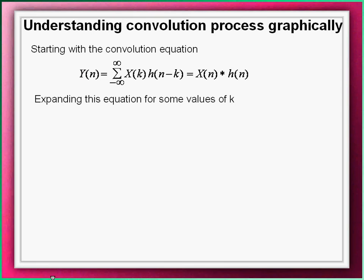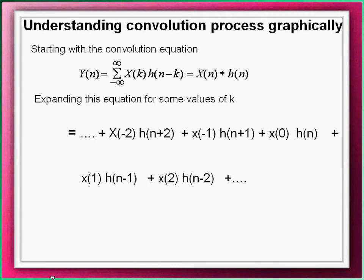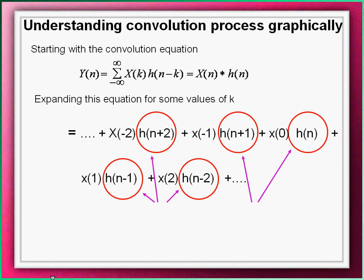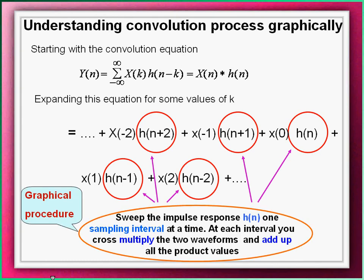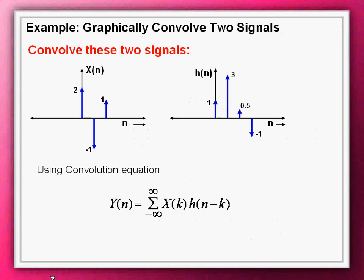The graphical method is the first and most popular method of convolution computation. Starting with the convolution equation and expanding it for various values of k, we observe that each impulse response is weighted by the input value. Graphically, this can be interpreted as: sweep the impulse response one sample period at a time over the input; at each interval, cross-multiply the two waveforms and add all the product values. To better understand this, take an example of two signals x[n] and h[n] and convolve them graphically.